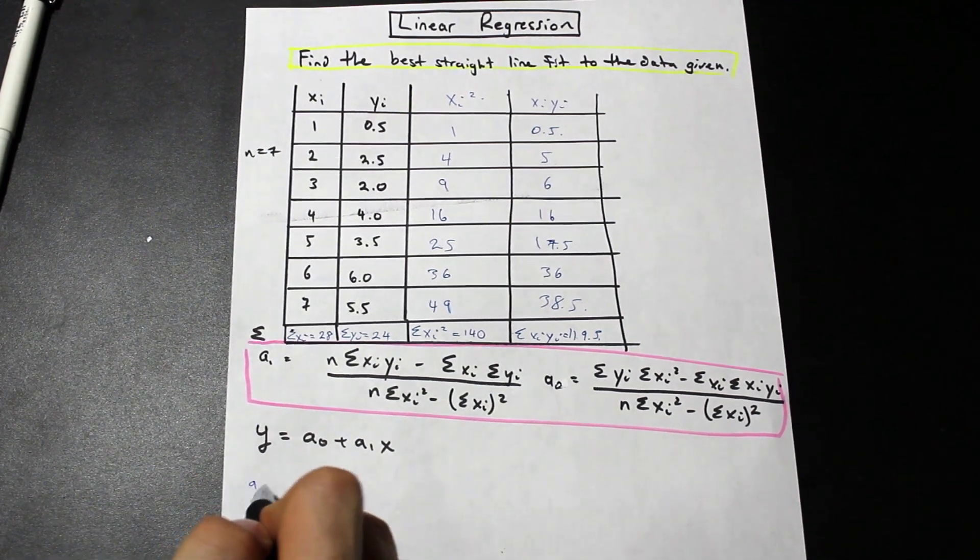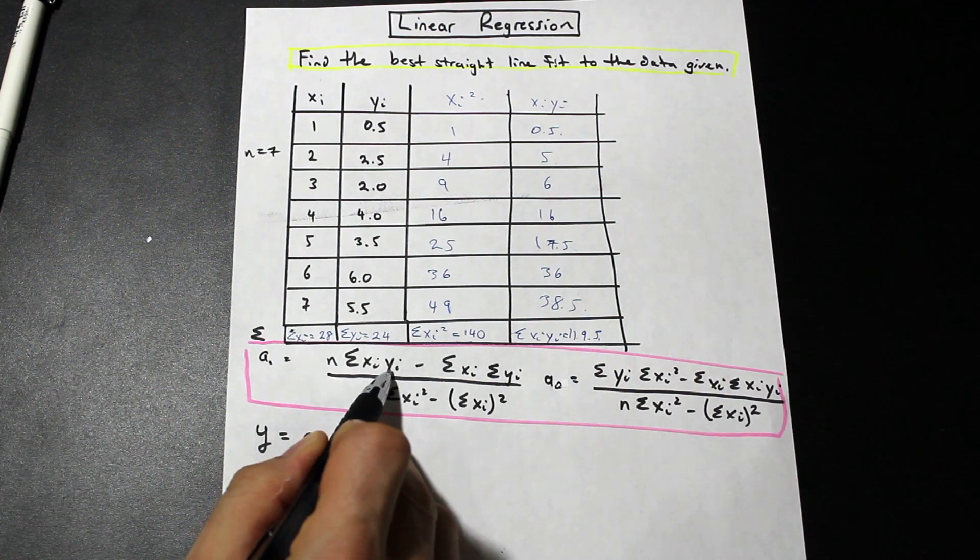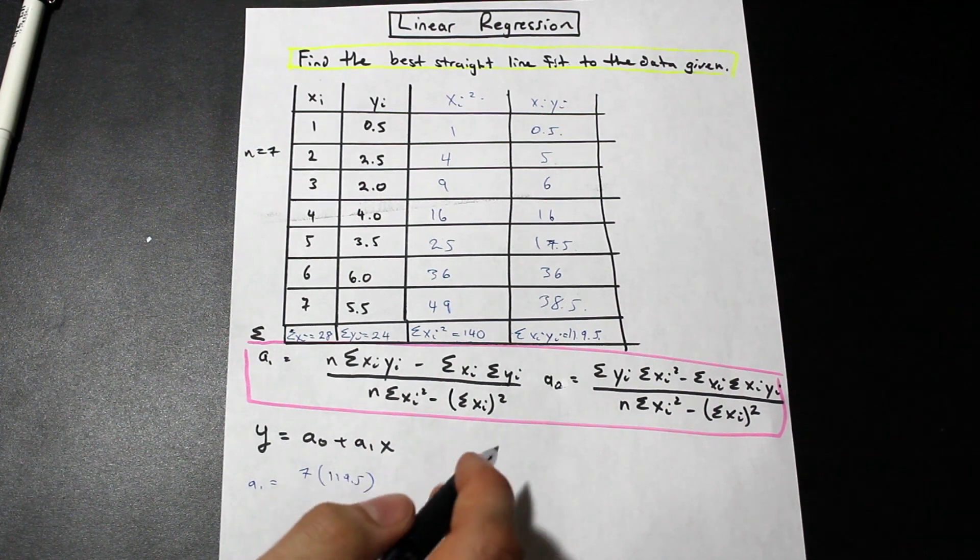Let's start with a1. So a1, we have n, which is 7. We have the summation of xi yi, that's 119.5. Very good.